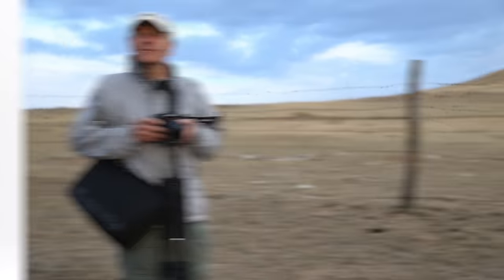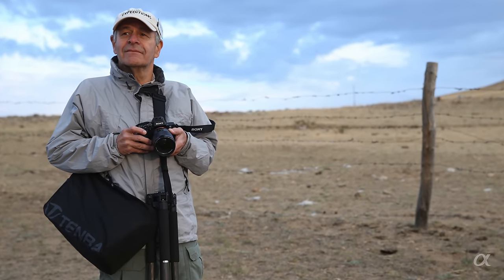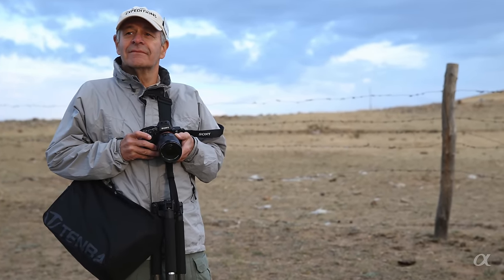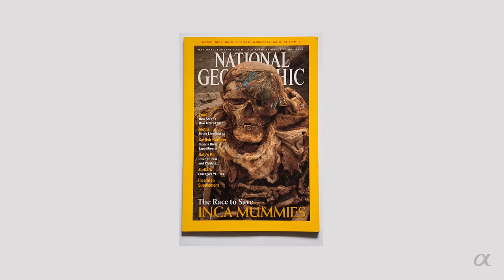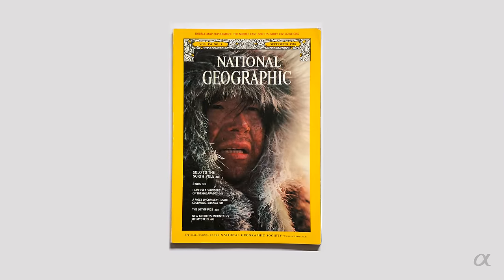Hi, I'm Ira Block, Sony Artisan of Imagery. I've been taking pictures for over 35 years. I started way back in the days of film. I'm lucky to have been associated with the National Geographic magazine through most of my career.